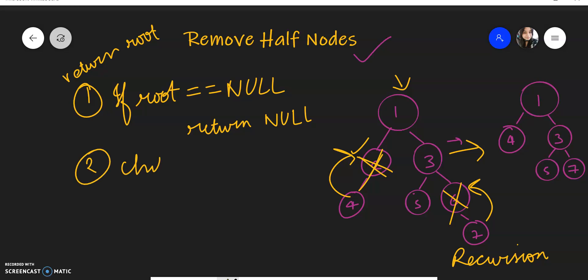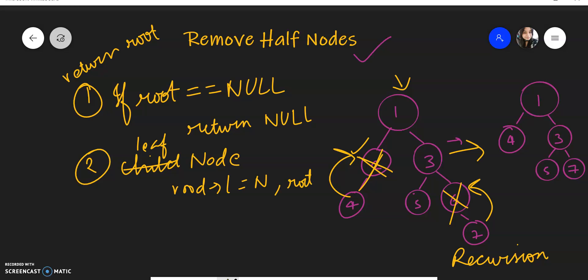The second base case is for leaf nodes. In this case, both the right child and the left child are null. So if root.left is equal to null and root.right is equal to null, we simply return the root.